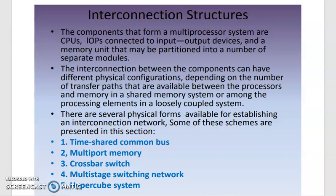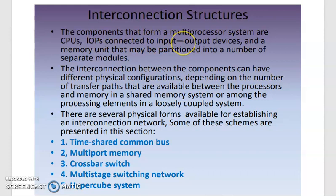Good morning. We are going to discuss the multiprocessor interconnection structure. The components that form a multiprocessor system are CPUs, IOPs connected to input-output devices, and a memory unit that may be partitioned into a number of modules. These components form the structure of multiple CPUs, input-output processors, input-output devices, and memory units.